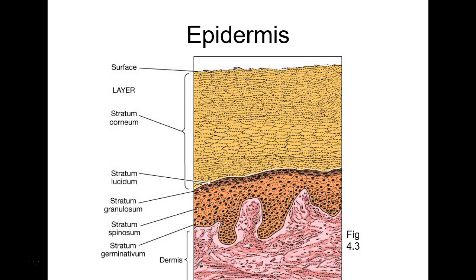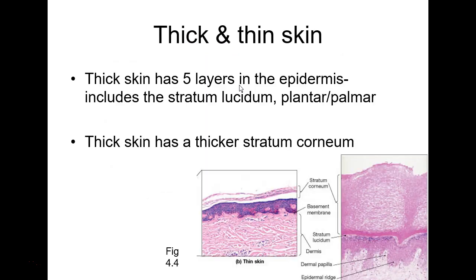If I ask you to name the five strata of the epidermis from top to bottom, you go: stratum corneum, stratum lucidum (in thick skin), stratum granulosum, stratum spinosum, stratum germinativum or basale. That's also the order a needle would pass through when giving a shot.